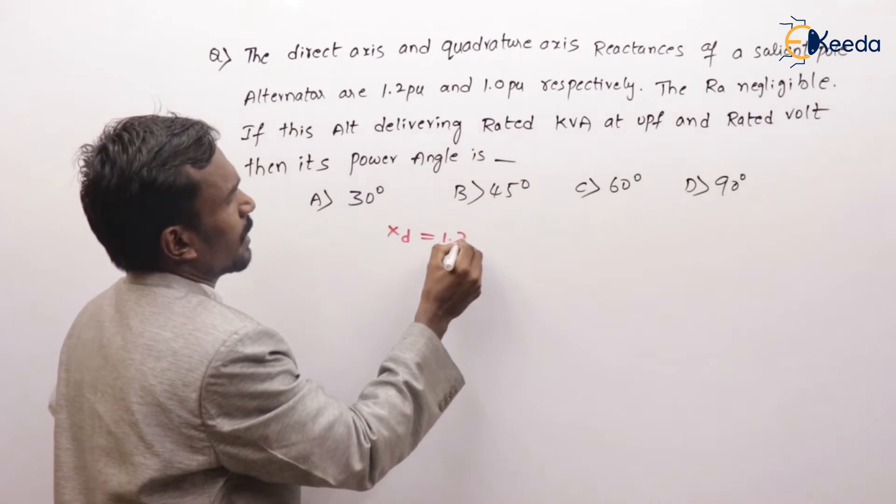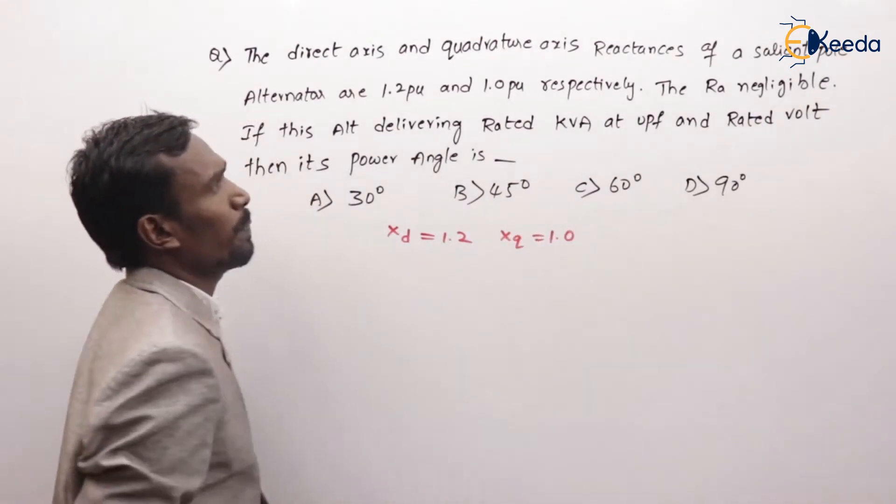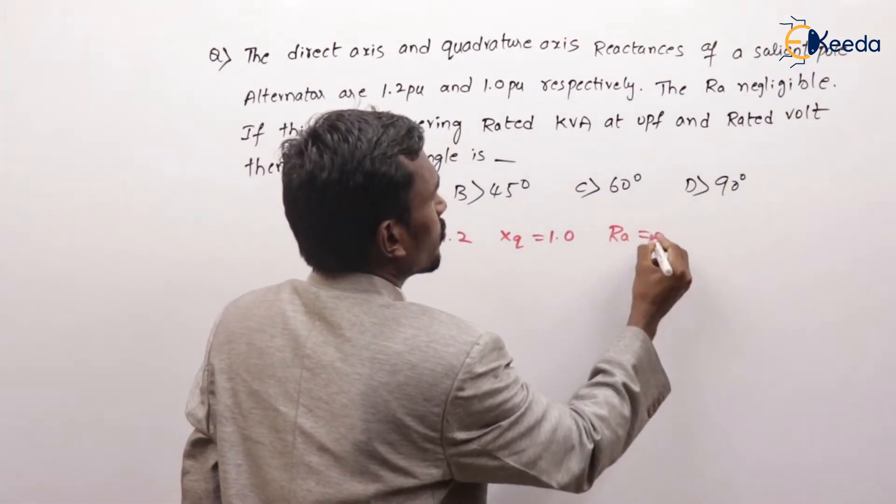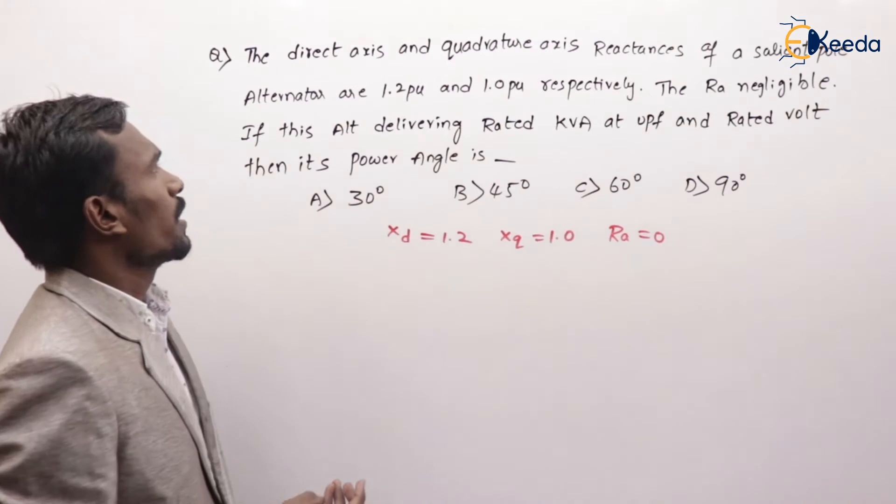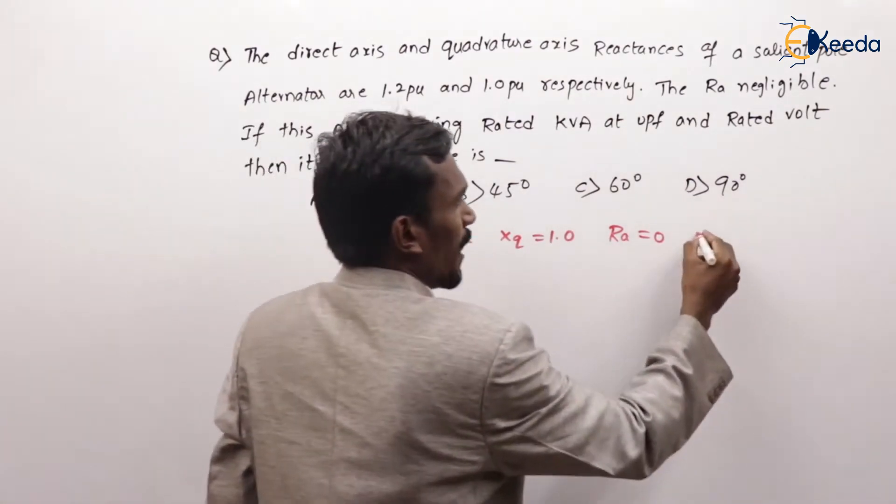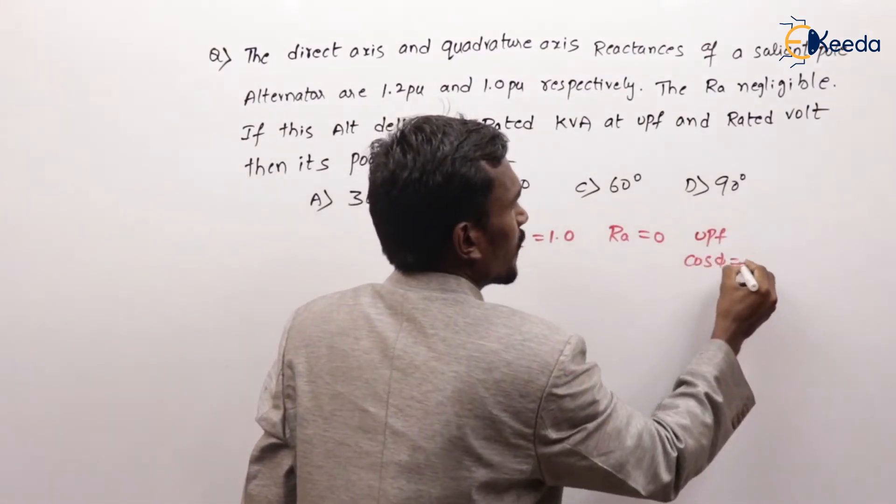Direct axis xd = 1.2, xq = 1.0 per unit respectively, and resistance is neglected. If this alternator is delivering rated kVA at unity power factor.